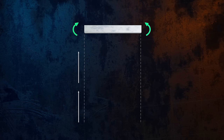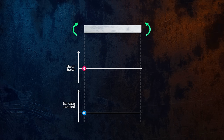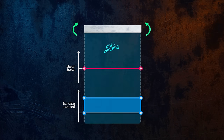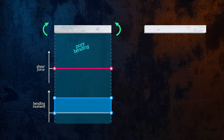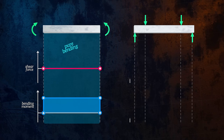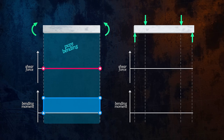A section of a beam is said to be in a state of pure bending when the shear force along it is equal to zero, and so there is a constant bending moment along its length, like there is for this beam loaded by two moments. We also have a case of pure bending over the middle section of this beam, where the bending moment is constant.